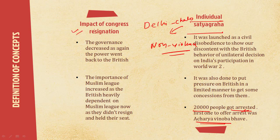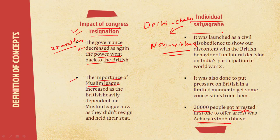One more thing we have to deal with is the impact of Congress resignation. In the 28 months of their rule, the people saw what Congress could do, but the moment the Congress ministers resigned, governance decreased and power went back to the British. The other major implication was that the importance of the Muslim League increased and the British became heavily dependent on the Muslim League since they did not resign and held their seats.